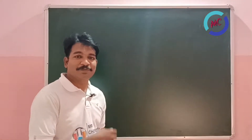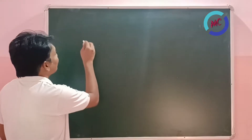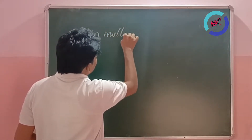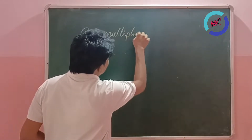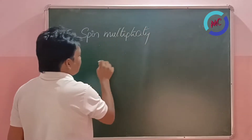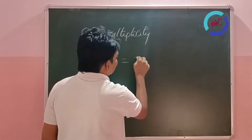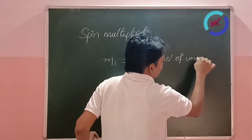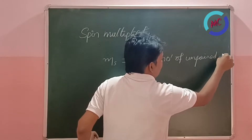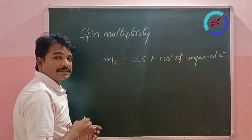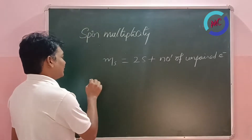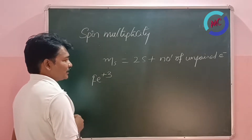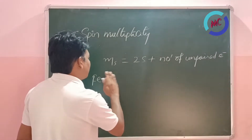Let us check how to find spin multiplicity in ferric ion in its ground state. Spin multiplicity MS = 2S + number of unpaired electrons. In this question they are asking spin multiplicity of ferric ion, that is Fe³⁺.